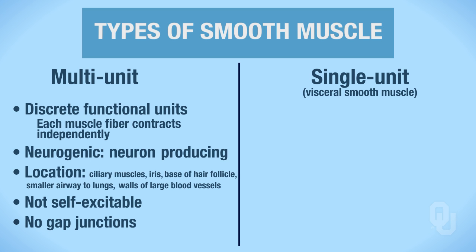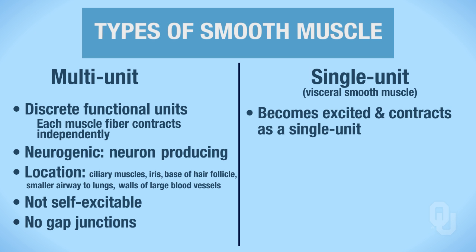Now let's compare those characteristics to single-unit smooth muscle, which is also called visceral smooth muscle. Single-unit smooth muscle becomes excited and contracts as a single unit. This is called a functional syncytium — this is where the whole muscle works as one unit, rather than independent fibers contracting. The whole muscle contracts together.